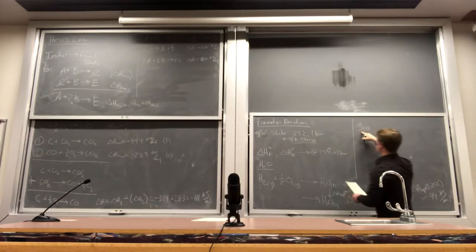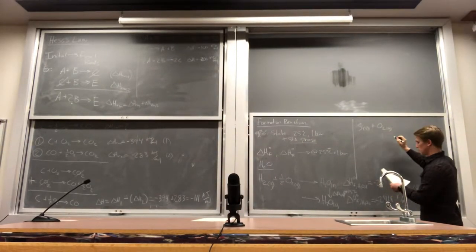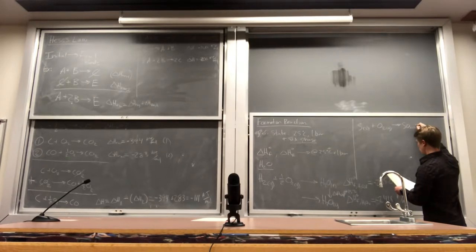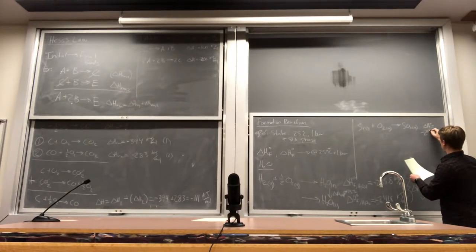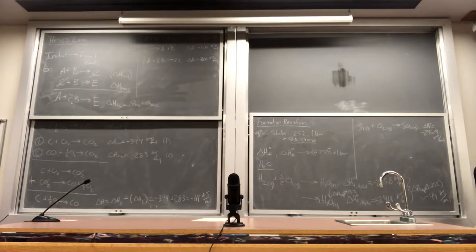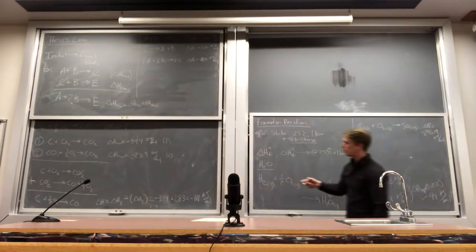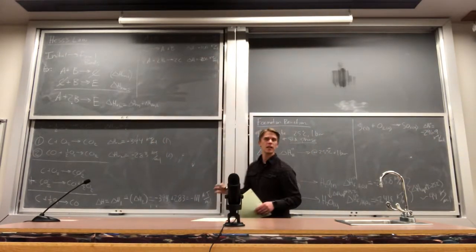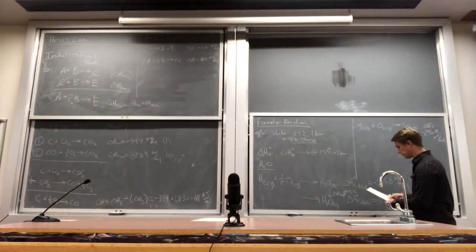Another example of a formation reaction: sulfur, which is a solid at room temperature, plus oxygen gas could form SO2 gas, with a ΔH of formation of minus 296.9 kilojoules per mole. This is another one of our combustion products — again, a really large negative number meaning these are extremely stable bonds. Hydrocarbons have a much less negative ΔH of formation; sometimes it's even positive. For combustion products like water and CO2, those massively negative numbers mean combustion processes are extremely exothermic.